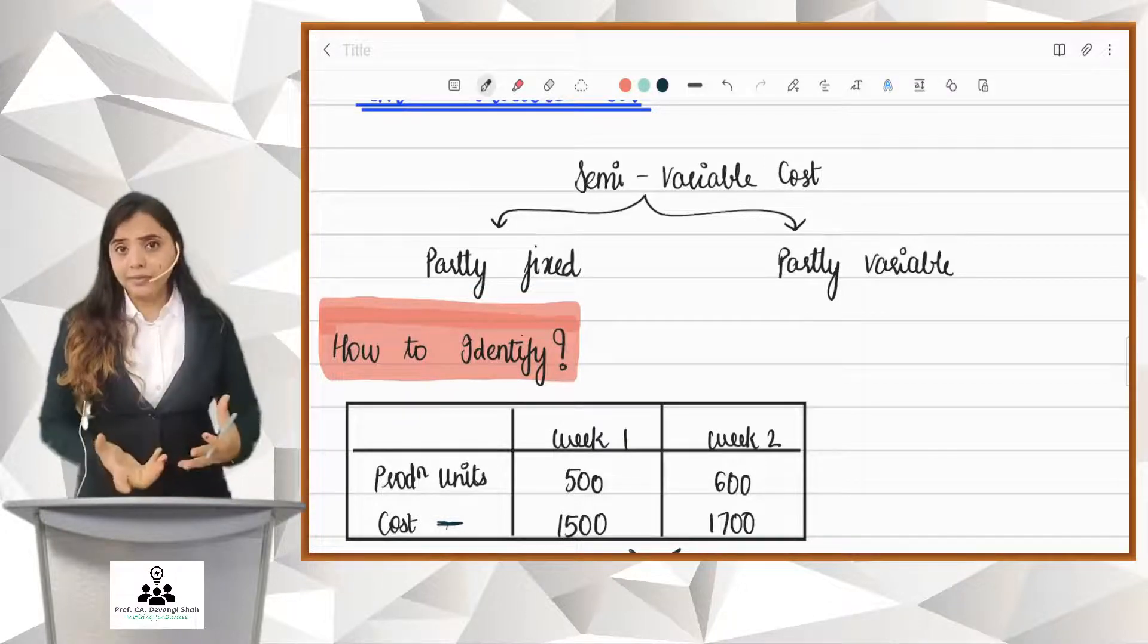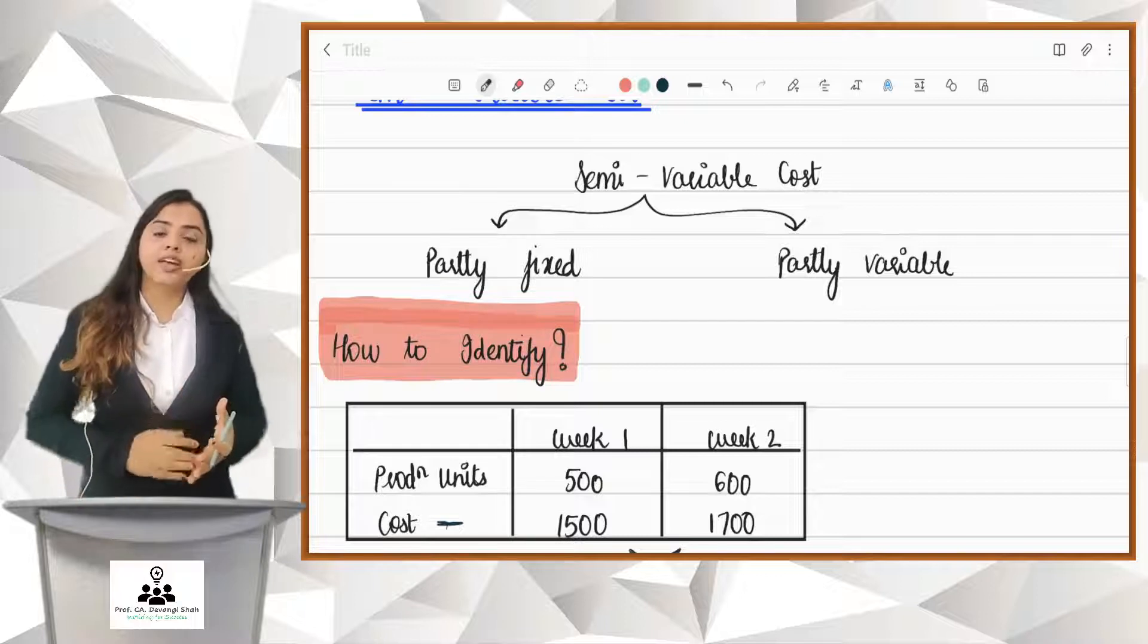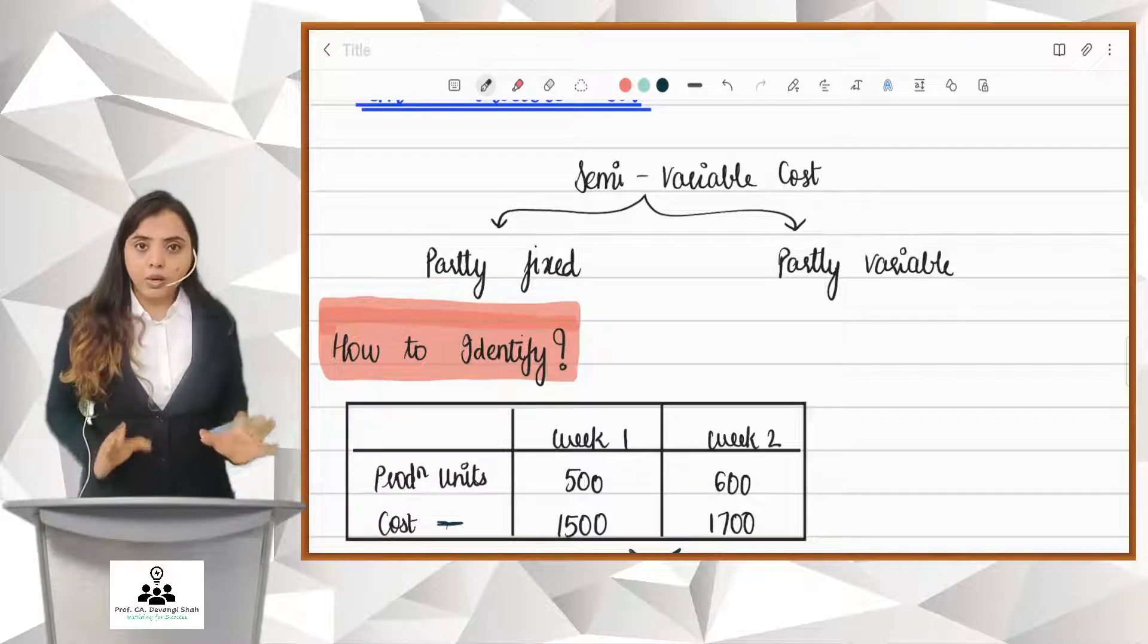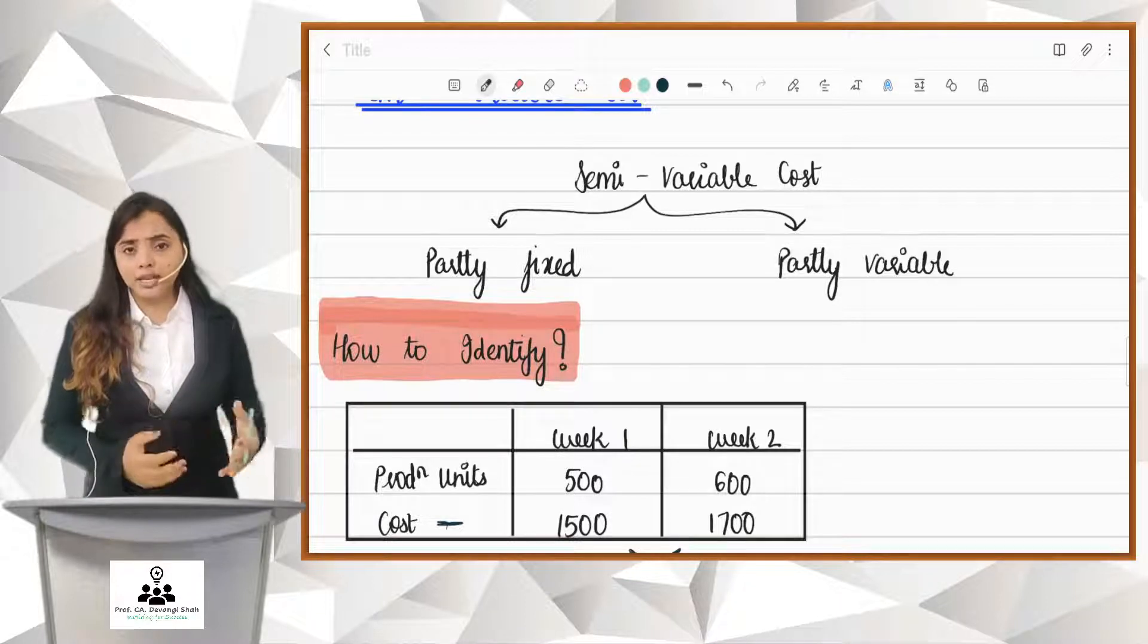If it were same, 1500, 1500 or 1700, 1700, then it would have been fixed. Okay, this is not a fixed cost. Now if it is not fixed, let me check. Is it variable?